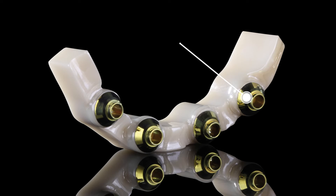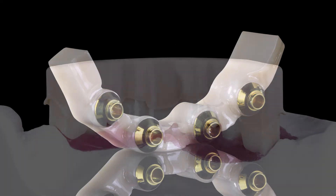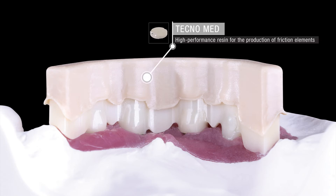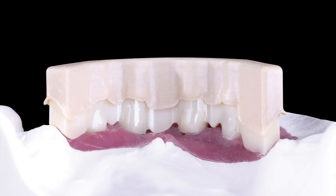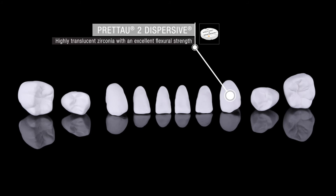The parallel bar was then fixed to the model, digitized, and used as the basis for the production of a friction coping made of Techno Med resin. After checking function and aesthetics in situ with a resin prototype, the individual monolithic teeth were fully anatomically designed with pre-shaded zirconia Preto 2 Dispersive.